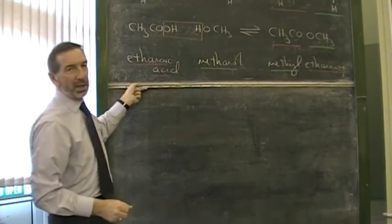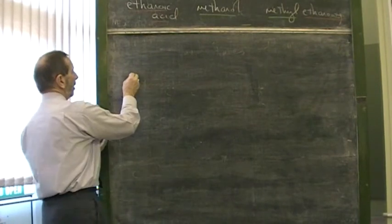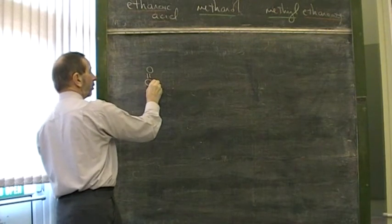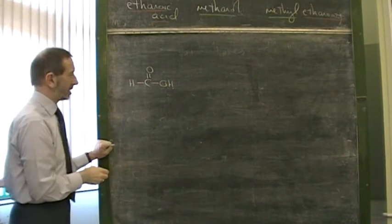Let's take one that's slightly different. Let's take, for example, methanoic acid. Methanoic acid, as the name implies, you have only one carbon atom. There it is, methanoic acid.